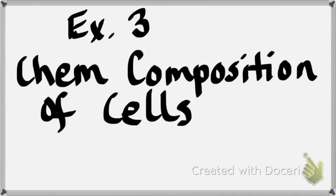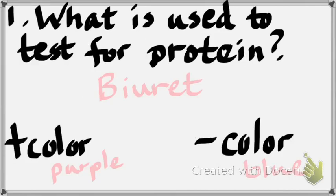Back on page 40 — what chemical do we use for protein? Biuret. What's the positive color for protein? Purple. What color is negative? Blue. So we use biuret; positive color is purple, negative color is blue. Let's move to starch. What do we use to test for starch? Iodine.